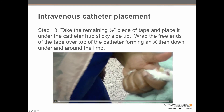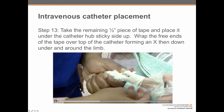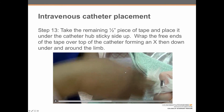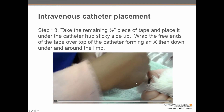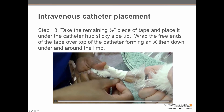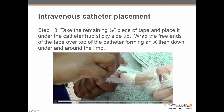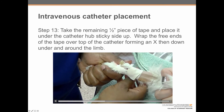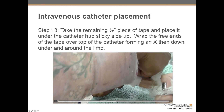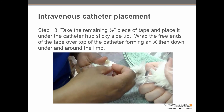Step 13: take the remaining half-inch wide piece of tape and place it under the hub sticky side up, then wrap the free ends over the top in an X pattern, and then down and under around the limb. This step secures the injection port. The tape goes under the port sticky side up, then crosses around onto the injection port — first one side, then the other — forming an X to make sure the hub doesn't move.